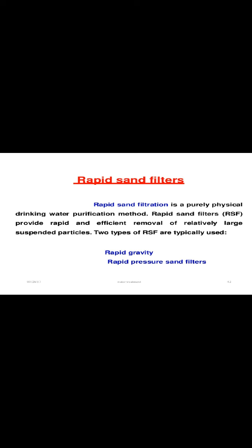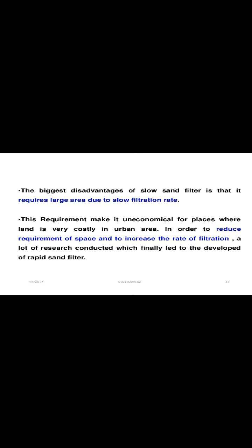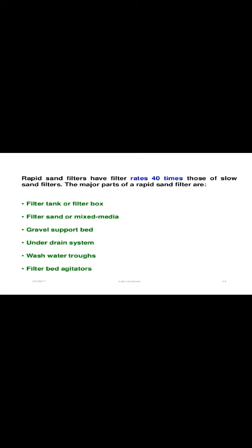Rapid sand filters provide rapid and efficient removal of relatively large suspended particles — a purely physical drinking water purification method. The two types of rapid sand filters are rapid gravity filters and rapid pressure sand filters. The biggest disadvantage of the slow sand filter is that it requires a large area due to its slow filtration rate, making it uneconomical where land is costly. Rapid sand filters have filtration rates 40 times those of slow sand filters. The major parts include a filter tank, filter sand or mixed medium, gravel support bed, under-drain system, wash water troughs, and filter bed edge layers.